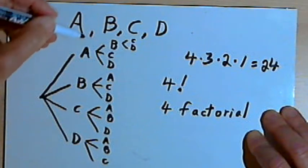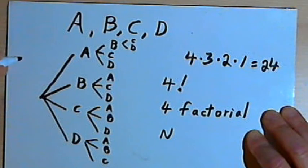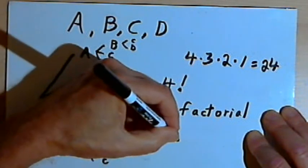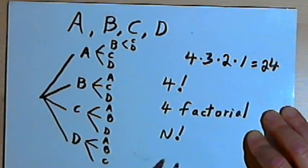In general, if we have a set of, let's say, n objects, and I want to know how many different ways there are to arrange them or permute them, I'm going to just say there are n factorial different permutations of n objects.